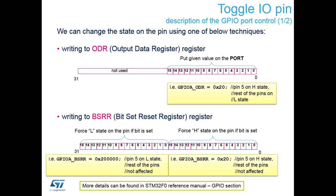If an interrupt arrives during our read-modify-write cycle while we're doing the modify part, it goes off to the interrupt service routine and may change values on Port A. When we resume, the data we read from the data register and pushed onto the stack is no longer valid, so we'd write incorrect information back to the rest of GPIO Port A. Using the Bit Set Reset Register is much safer and more efficient.